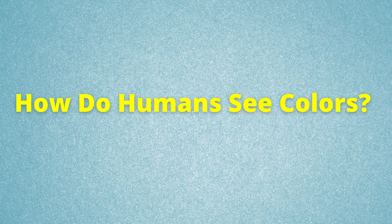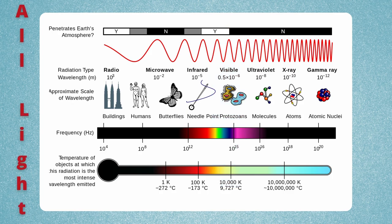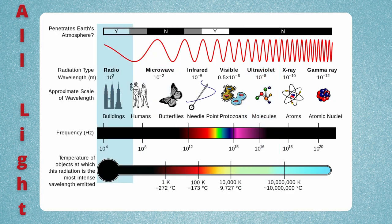To answer that question, first we need to talk about what allows us to even see colors in the first place. Vision comes from light, and the light that we can see is the visible light section of the electromagnetic spectrum. This spectrum contains all the types of light that are known to exist, and consists of everything from visible light to UV to microwaves and even radio waves.